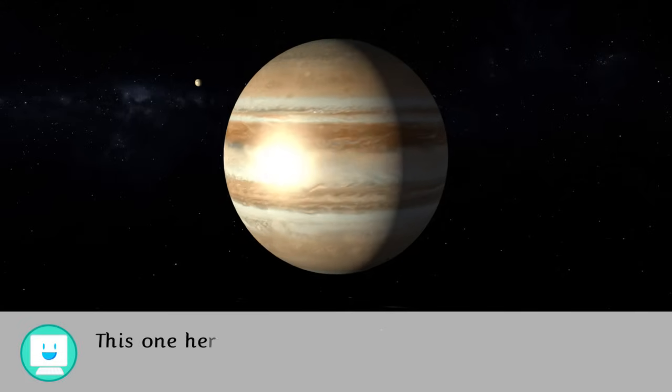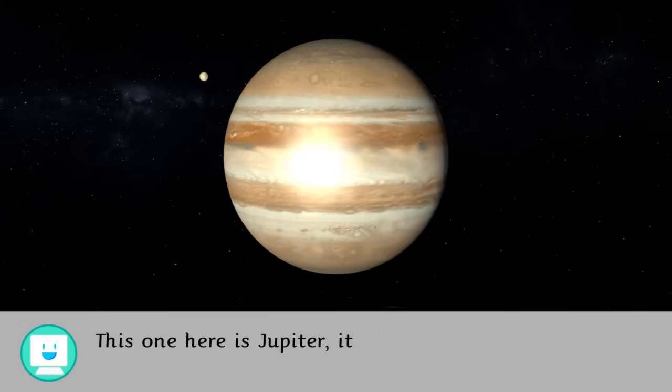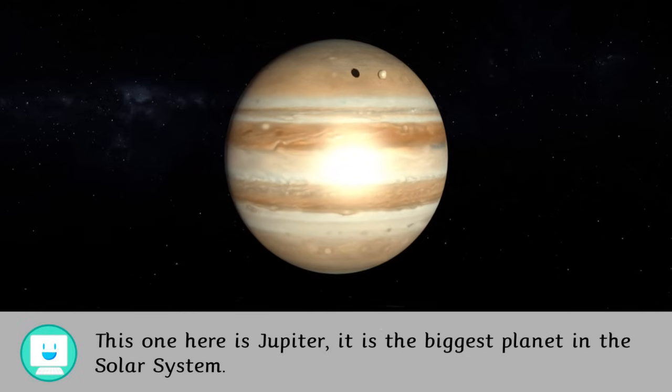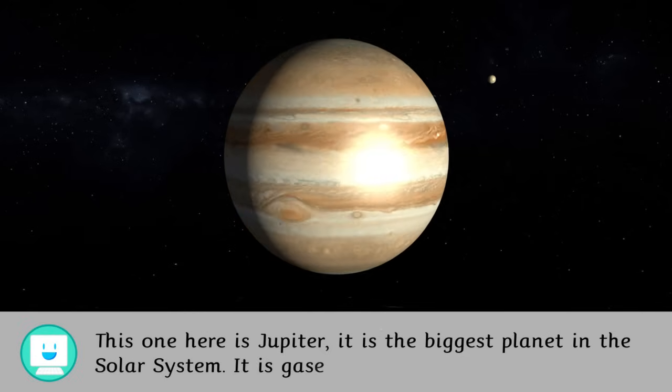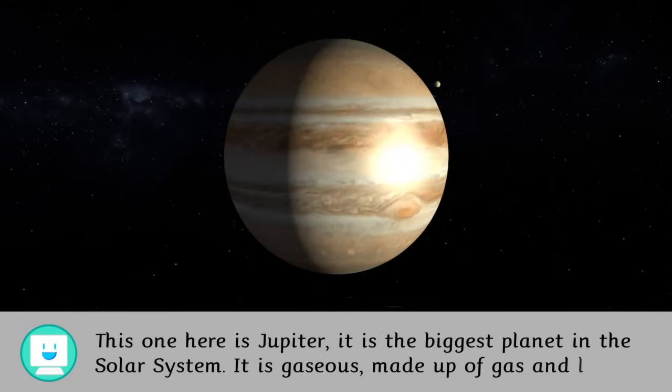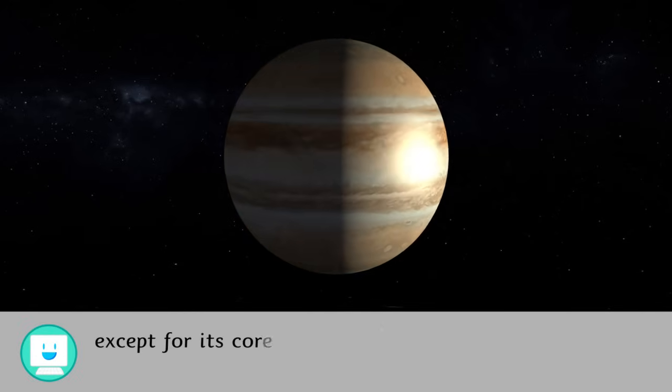This one here is Jupiter. It is the biggest planet in the solar system. It is gaseous, made up of gas and liquid, except for its core that is rock.